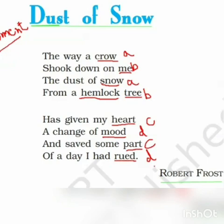There is another poetic device — alliteration. The example is 'has heart.' So the poetic device used here is alliteration. I hope you've understood the poem. What the poet basically wants to say is that even a small incident can bring a big change in our life. Thank you.